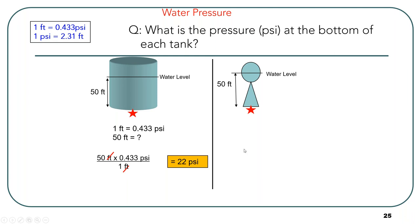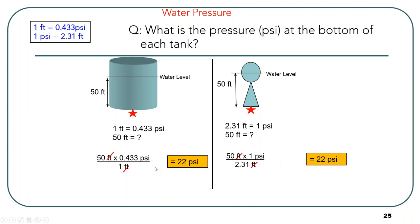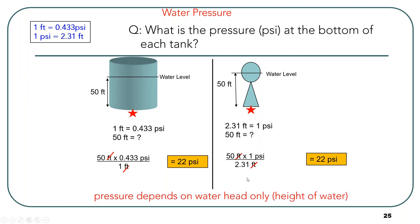Looking at both problems, we used two different formulas with two different storage tanks. The volume of water in each tank might be different, but the only thing that matters at this point is the height of the water. Whether you have 100 gallons or 500 gallons doesn't matter — it's just the height of the column. Pressure head depends on water head only — that is, the height of the water.